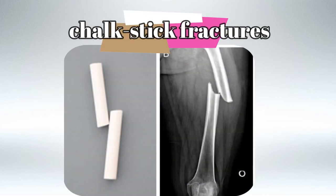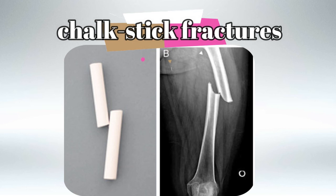In Paget Disease the fractures are commonly called chalk stick fractures, because the bone gets fractured at abnormal places and the mechanism of fracture is also abnormal — much like a chalk stick.